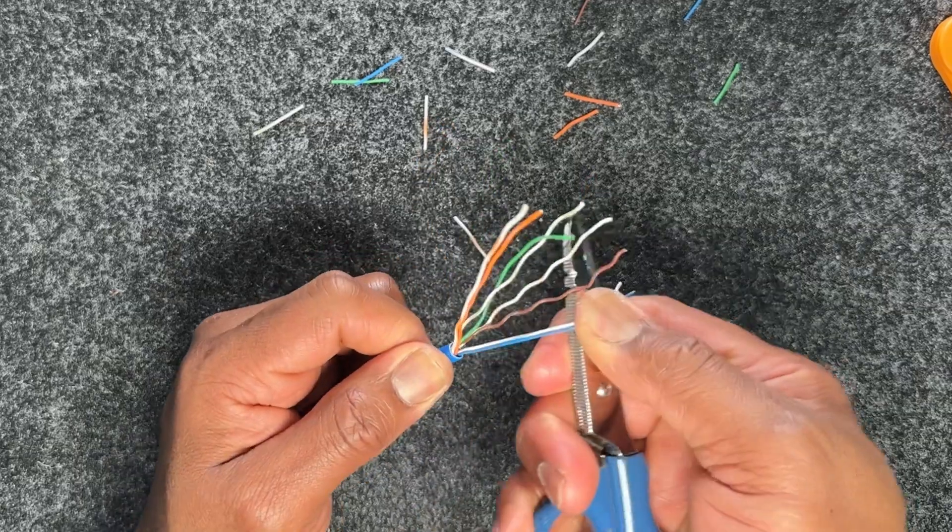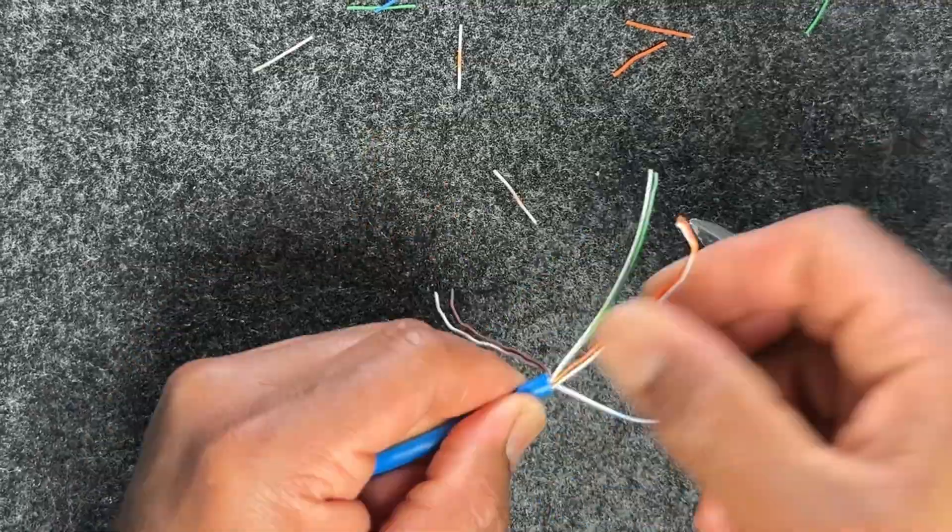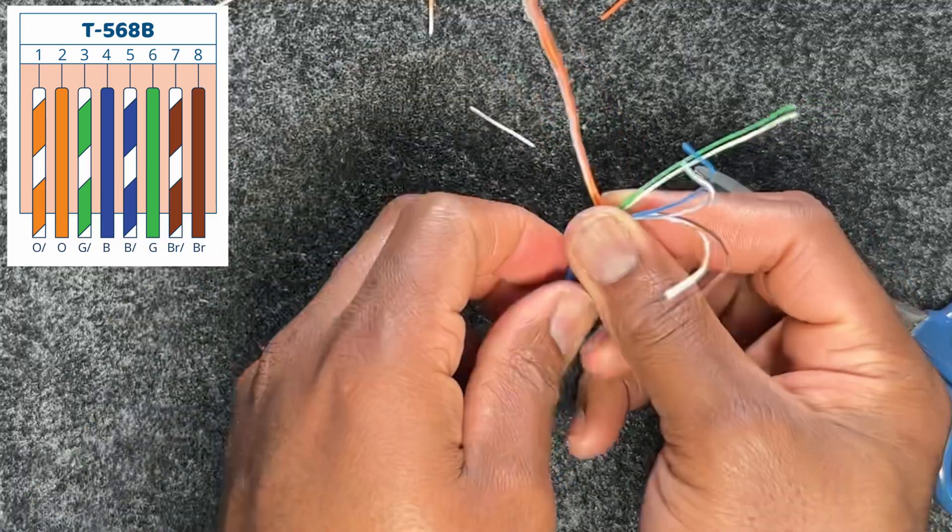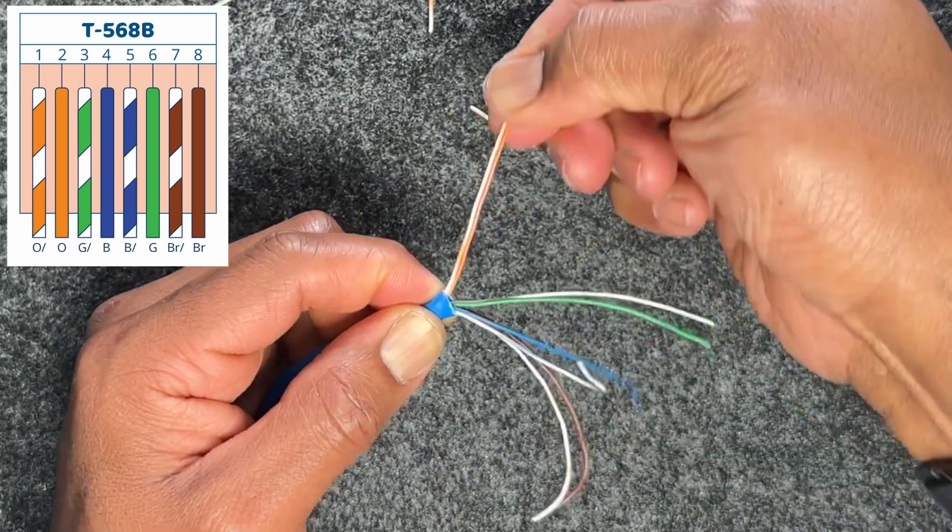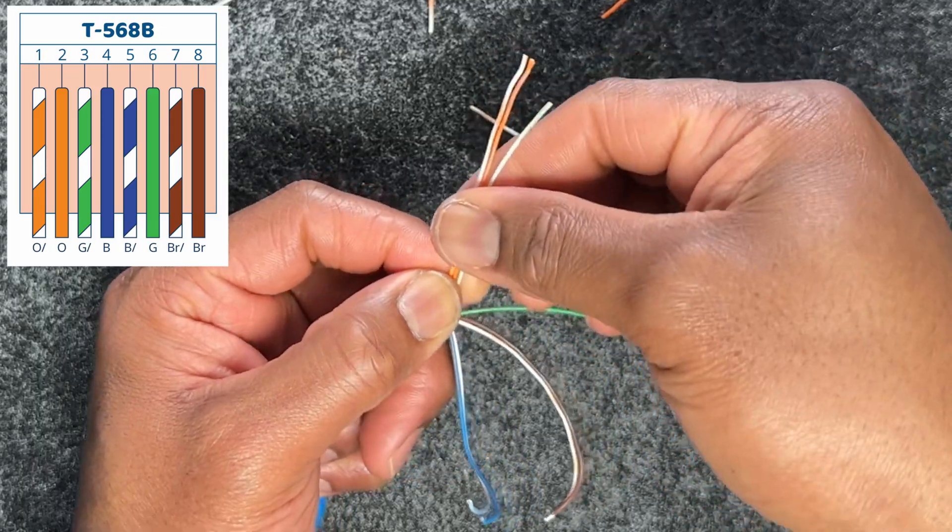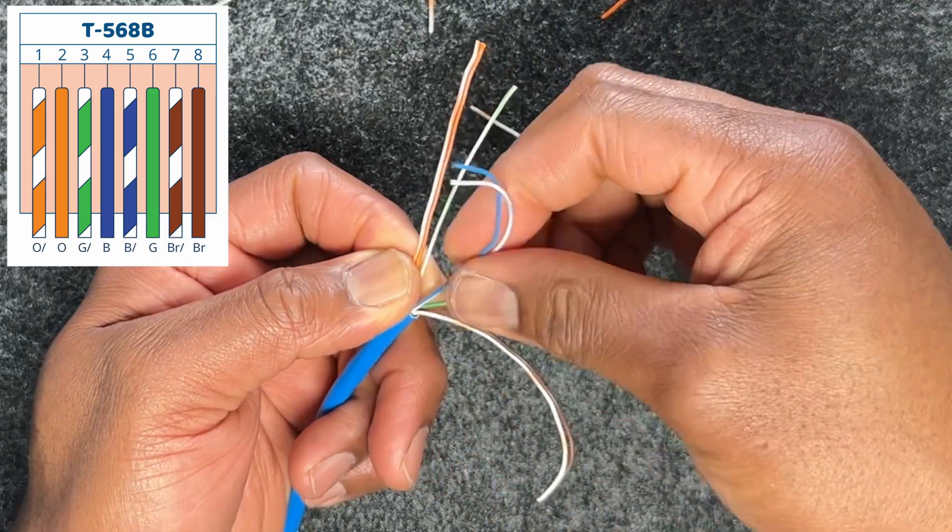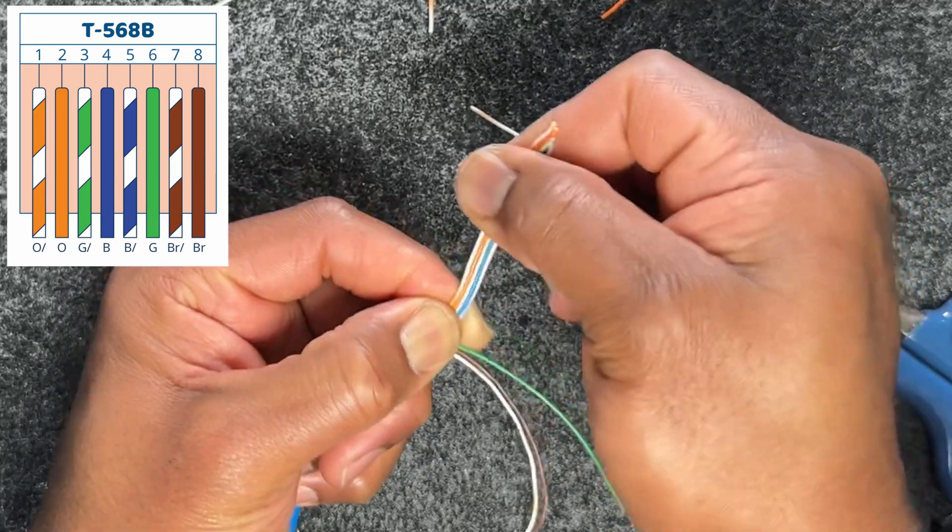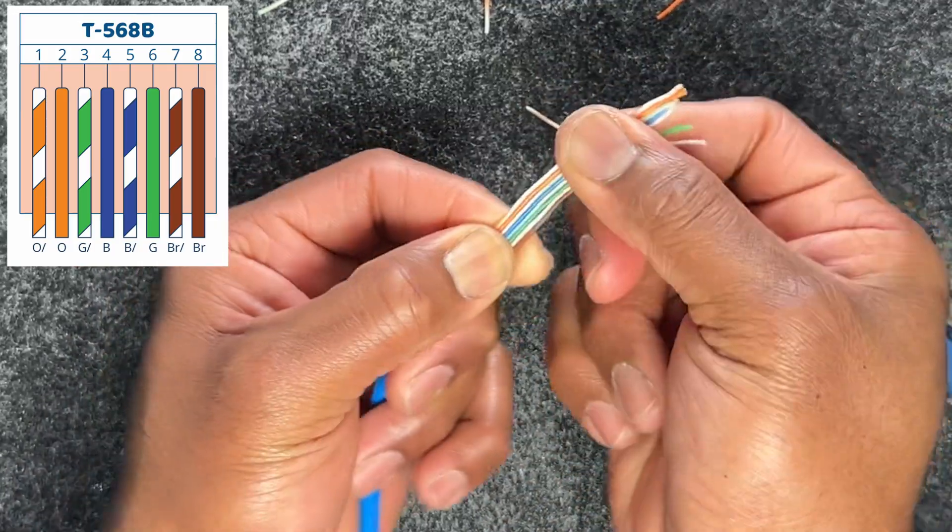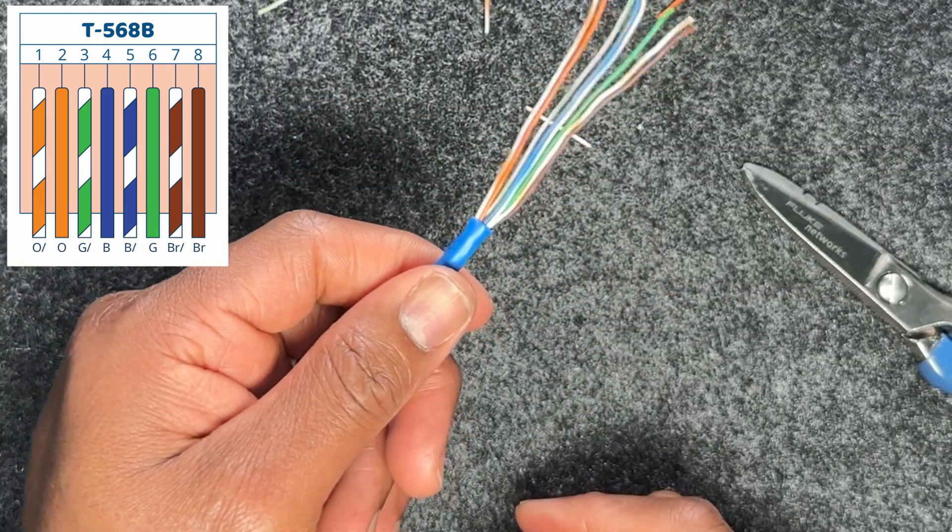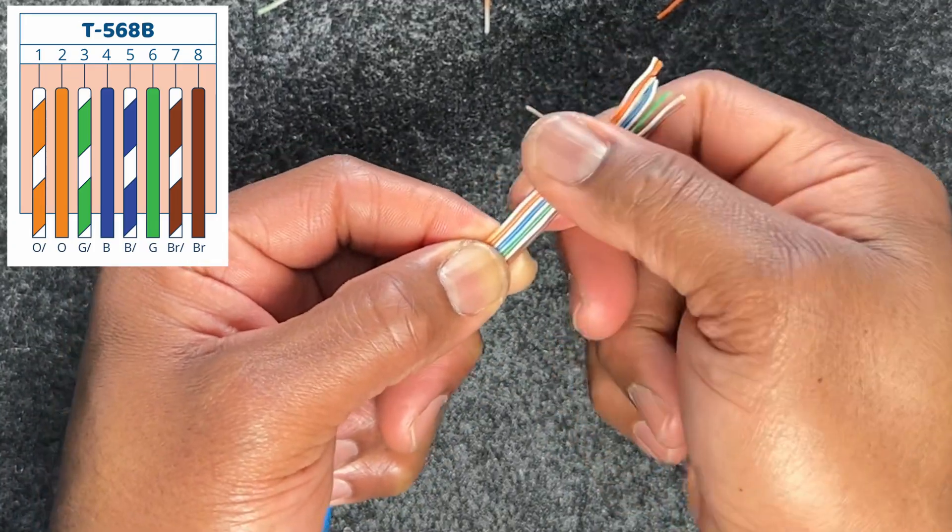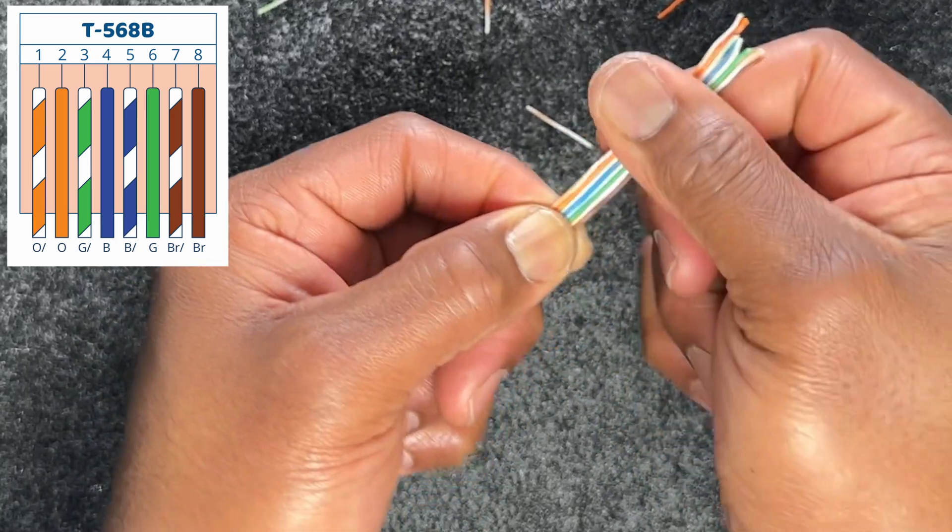I'll straighten them out, then do the green, the blue, and the brown. I'm going to take out all the kinks. It takes some practice to get used to this. I'll start with the pair arrangement, starting with white orange. I'll make sure the white orange and solid orange come here for pin one and pin two. Next is white green, then solid blue and white blue. I'll bring both together. After that, it's solid green, white brown, and solid brown.